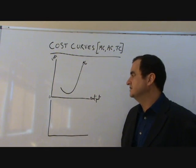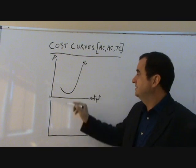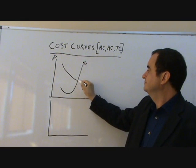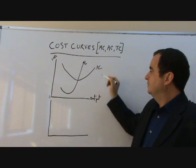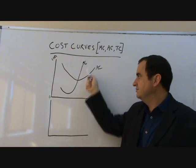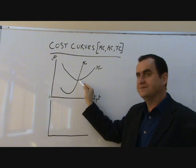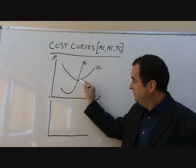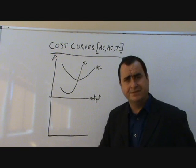So it's U-shaped like this. Now, the average cost curve will also be U-shaped, and it will cut the MC. The MC will cut through the AC at the lowest point of the AC. Always. This is a mathematical certainty.